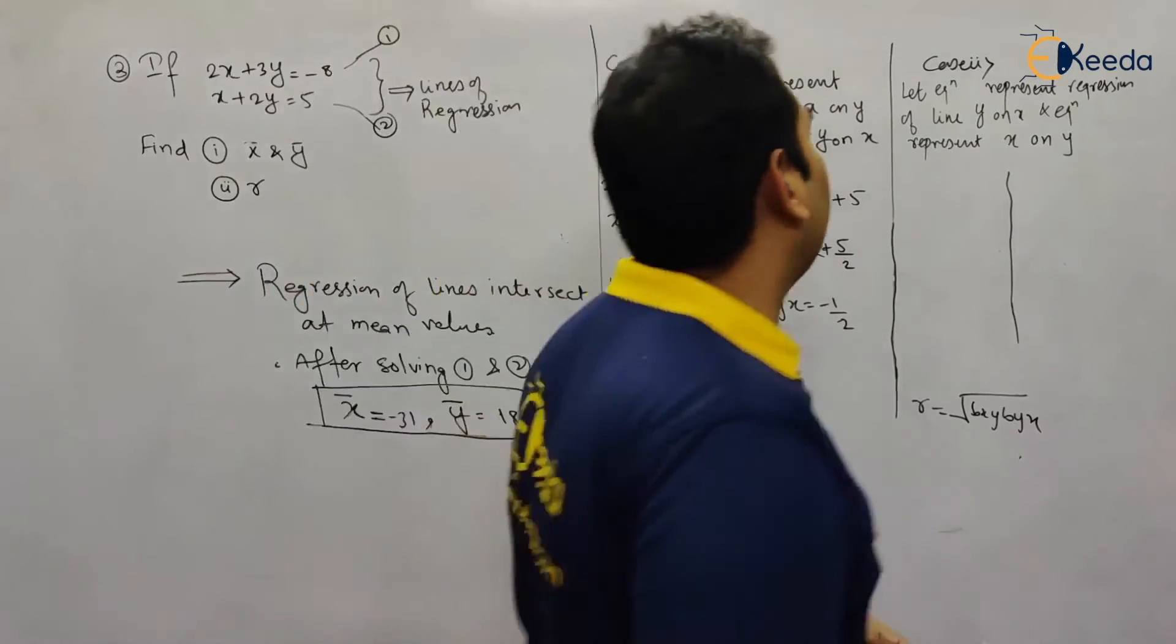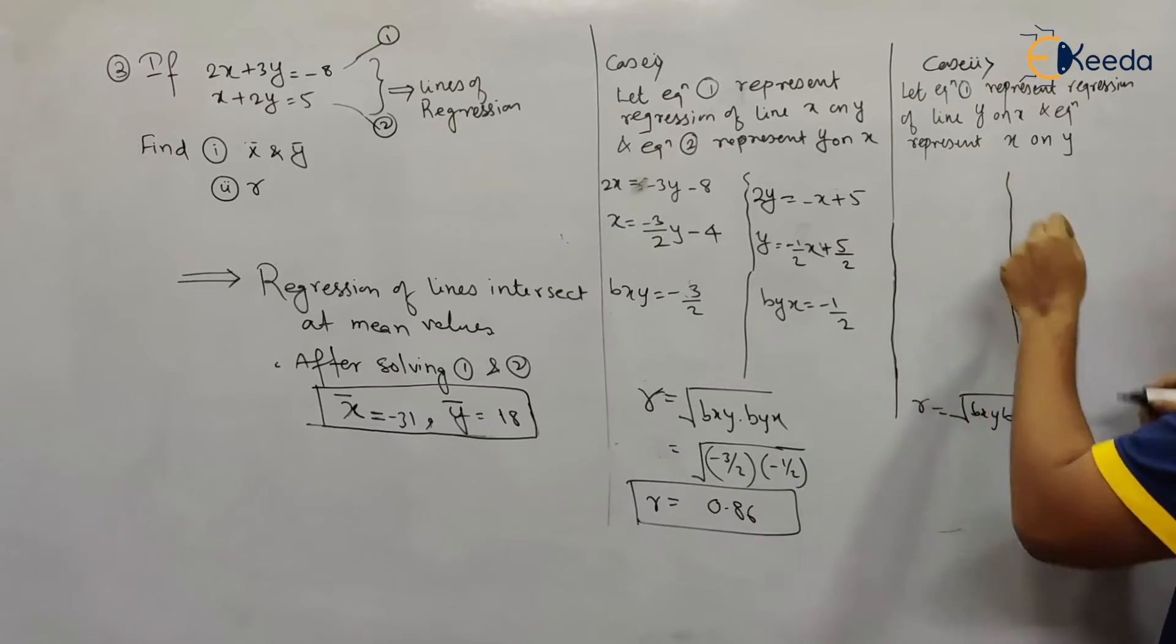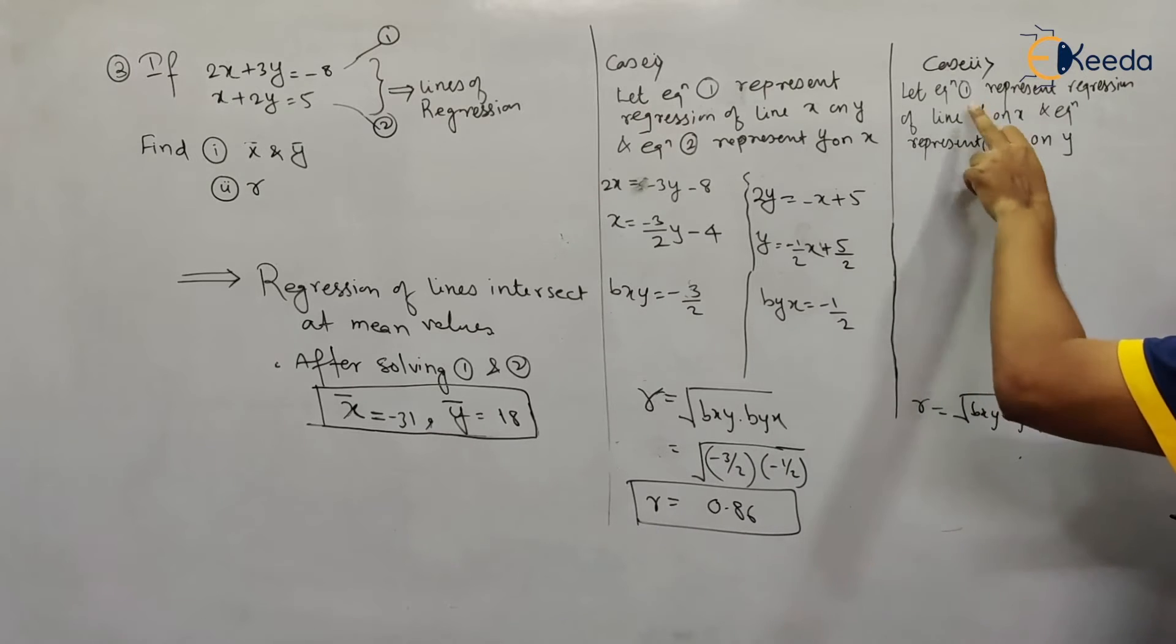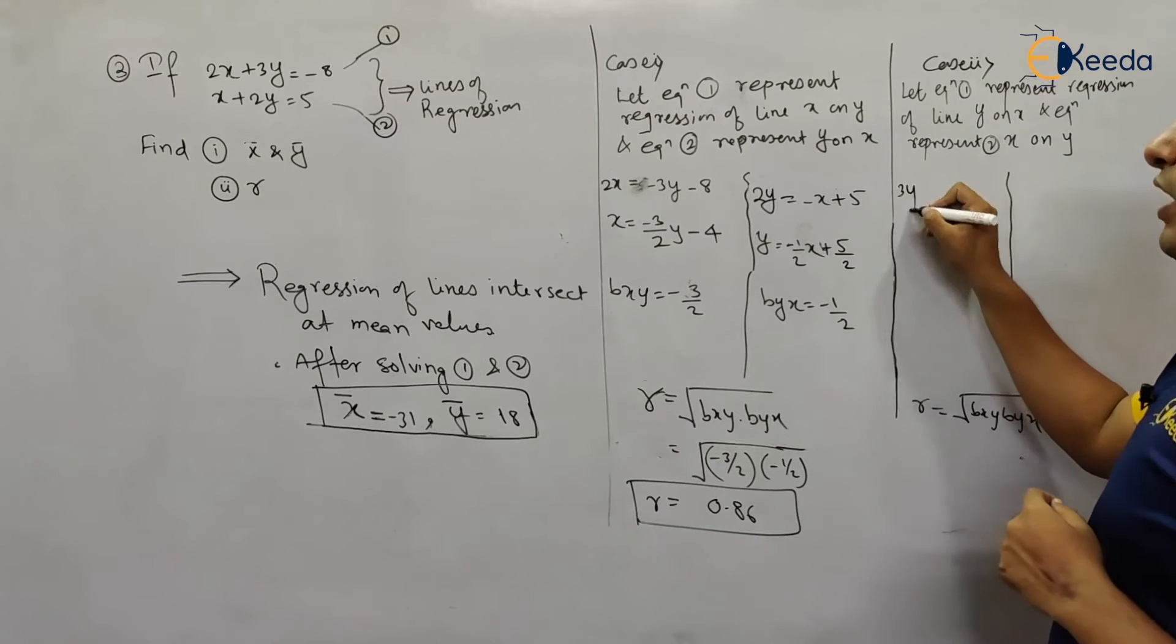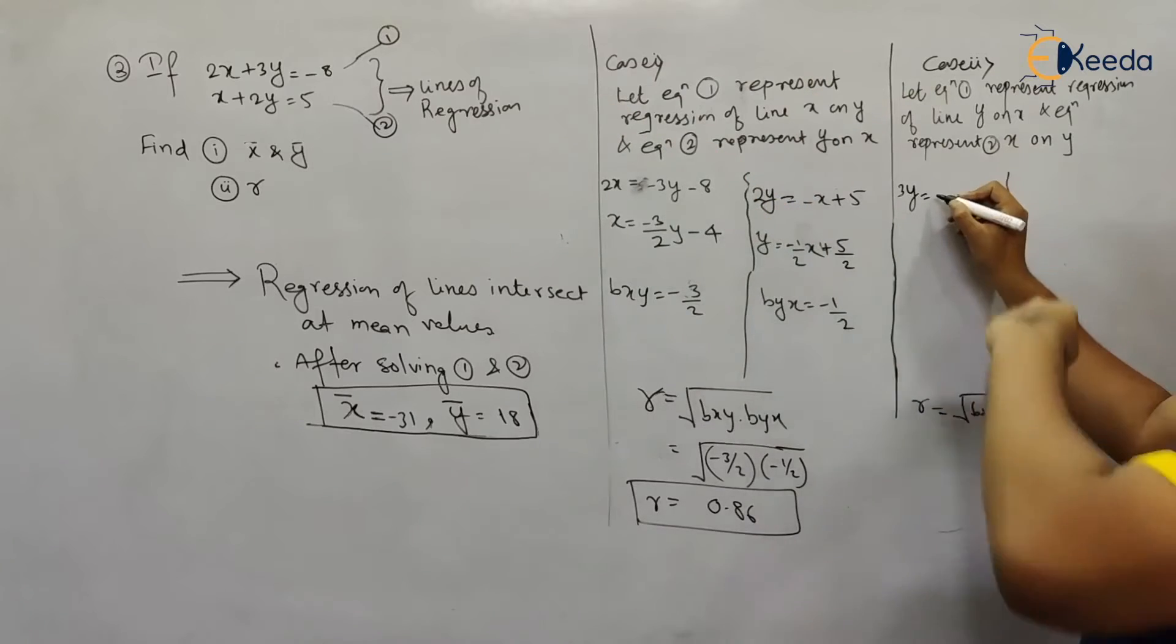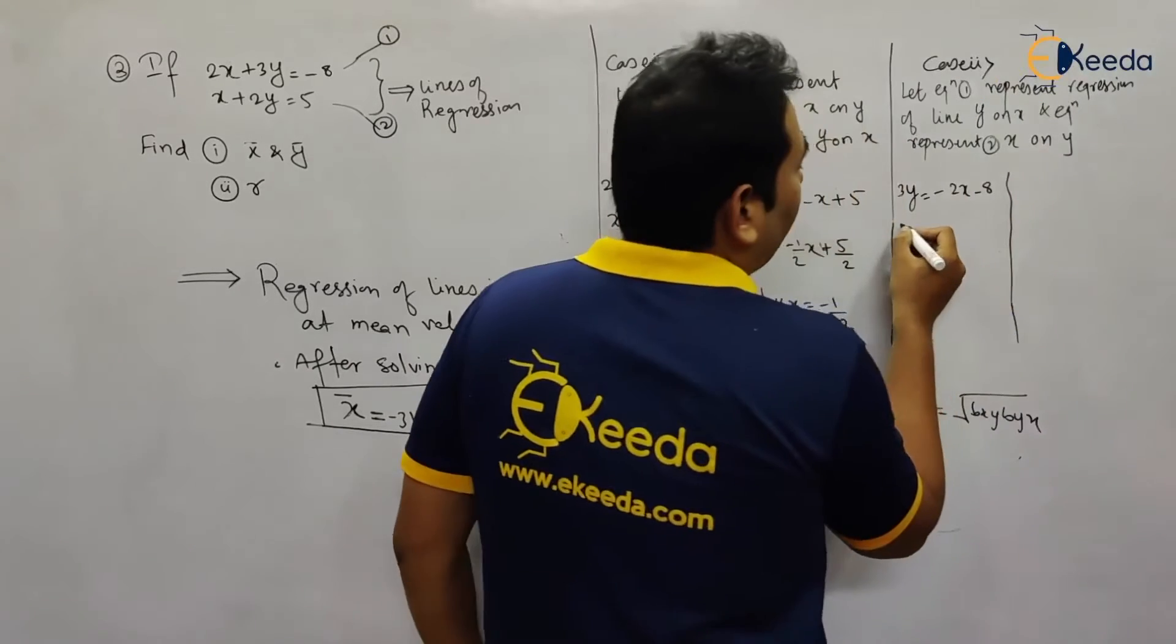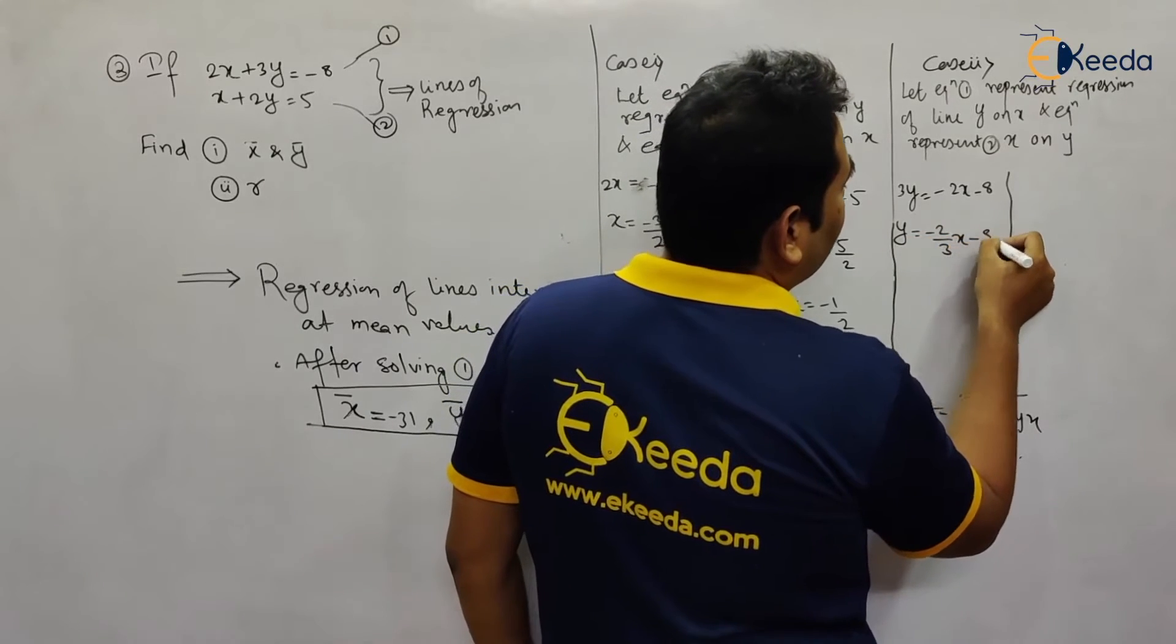Let's move on. Now opposite to that, equation 1 represents y on x and equation 2 represents x on y. This result will obviously be rejected. So equation 1 represents y on x, meaning y is on this side, 2x goes to that side becoming -2x - 8. So y = -2/3 x - 8/3.